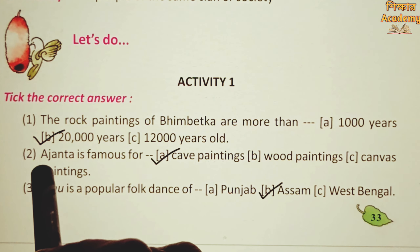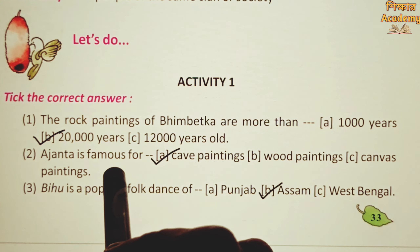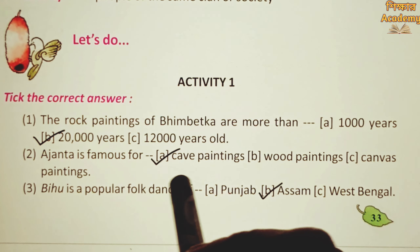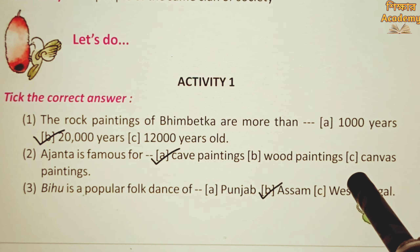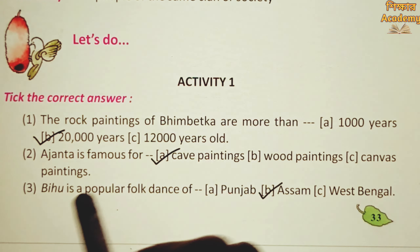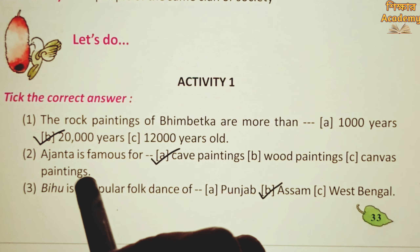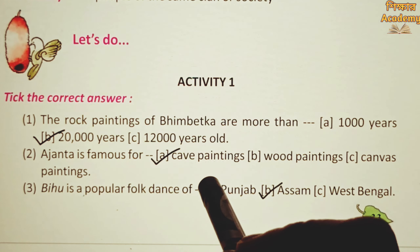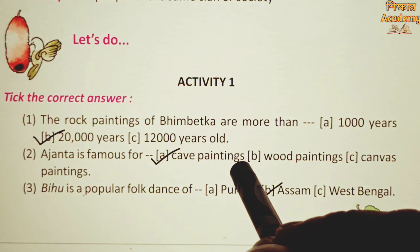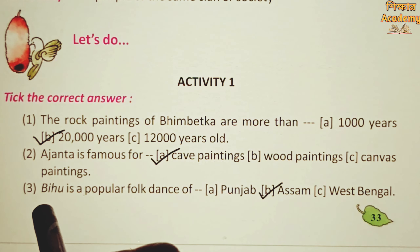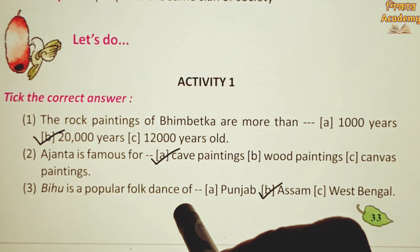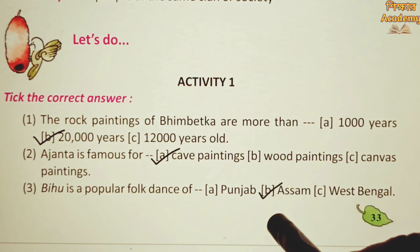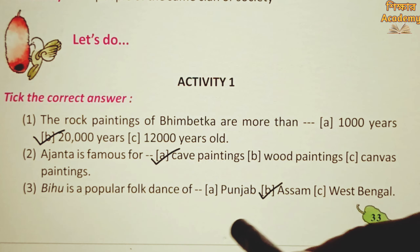Ajanta is famous for cape paintings, wood paintings, or canvas paintings. The correct answer is cape paintings. Bihu is a popular folk dance of Punjab, Assam, or West Bengal.